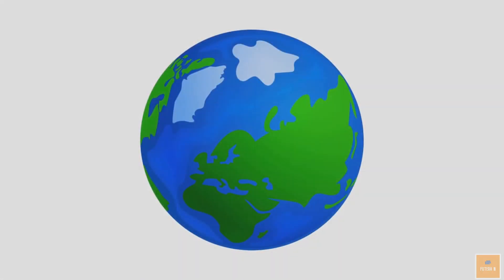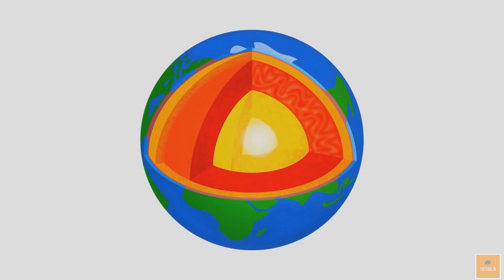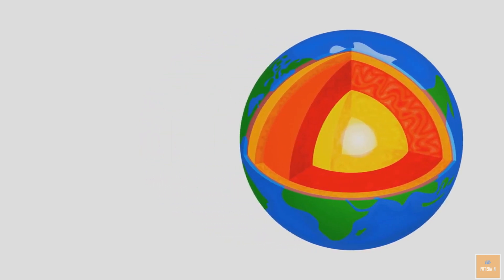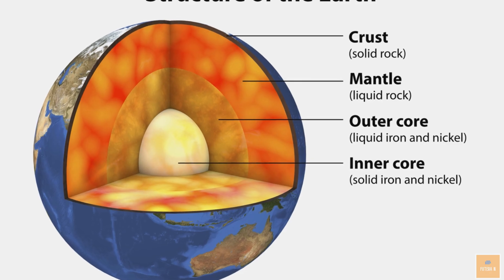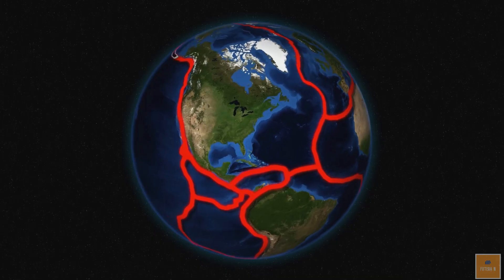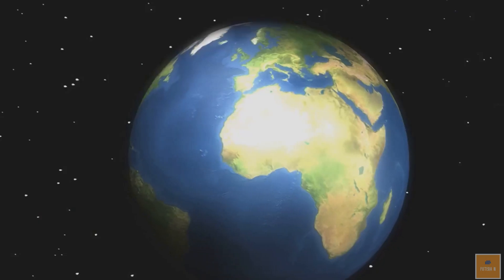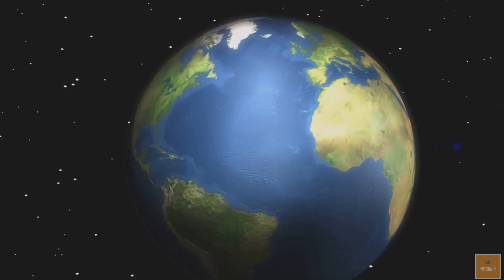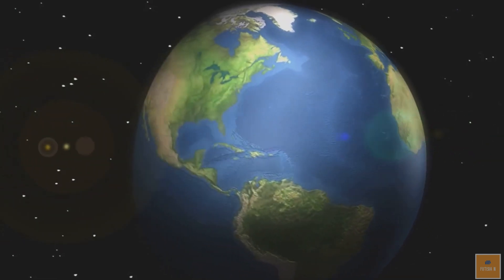Drilling through the Earth is a concept that has fascinated scientists and science fiction writers for decades. But what would happen if someone managed to drill through the planet? Would they fall out the other side? Would the Earth collapse in on itself? These are just some of the questions that arise when considering this hypothetical scenario.